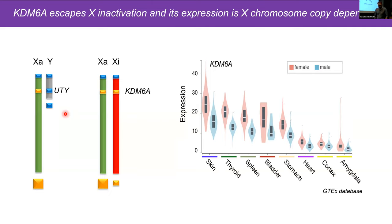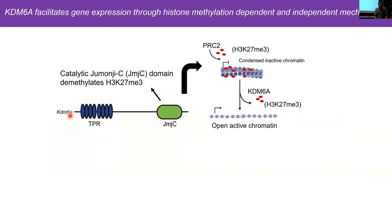KDM6A has a Y-linked paralog called UTY, sharing about 83% homology. KDM6A has a JMJC or Jumanji domain that catalyzes the removal of the repressive mark H3K27 trimethylation — particularly at bivalent domains — to facilitate or turn on genes. Bivalent domains are considered poised for either activation or repression, having both repressive and activating marks at the same time. They rely on KDM6A to resolve these domains, which is critical during development.